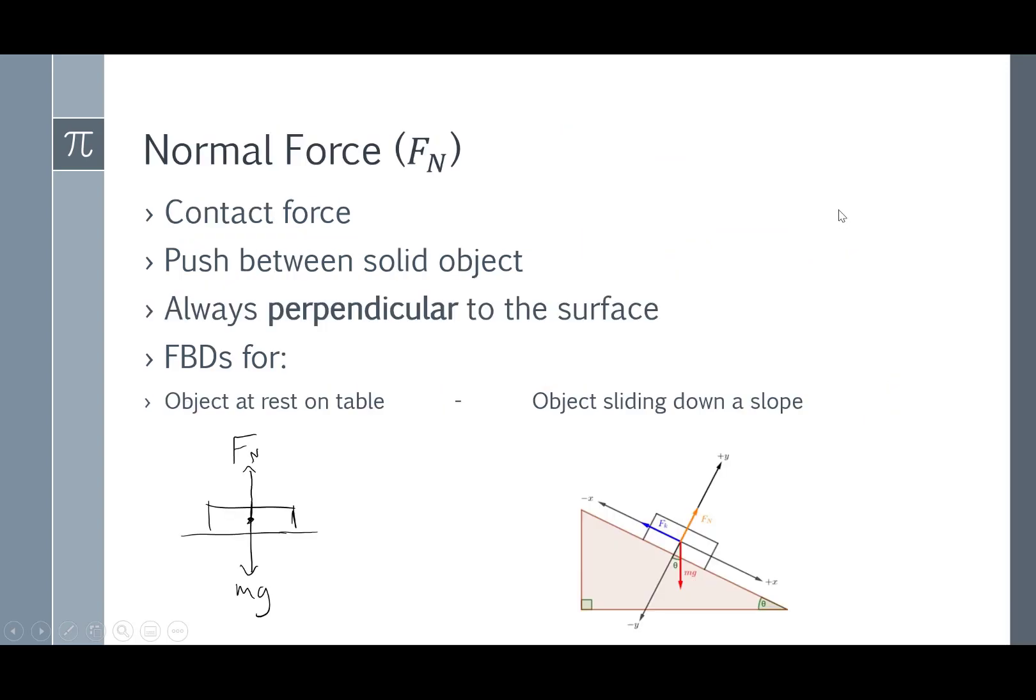The normal force is a hugely important force. Basically, any time you're sitting or standing on something, you're feeling the normal force. It's a contact force, unlike gravity, which means two objects have to be touching for there to be a force between them. And it's really just the push between solid objects that are touching each other. So if you're leaning against a wall, that wall is pushing on you out of the wall. If something's sitting on a table, the table is pushing up on that object to hold it up.